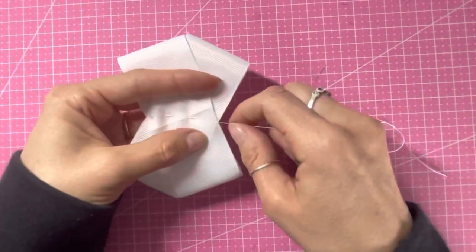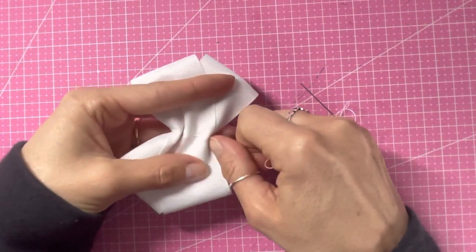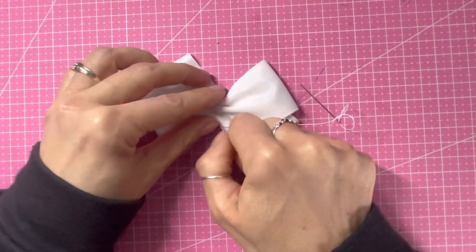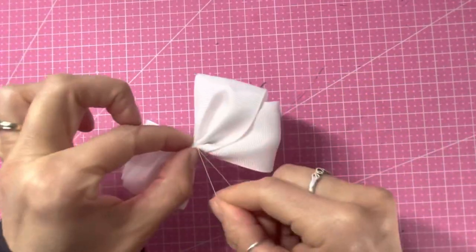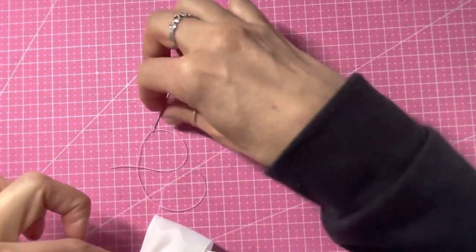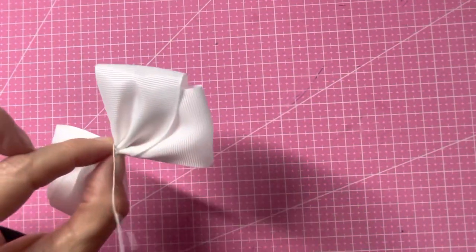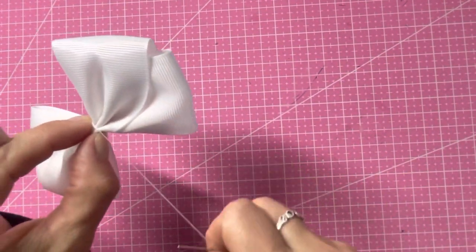And then when you've got those stitches in you can then give that a pull to form the pinch and then wrap that around the center a couple of times. And then on the underside just go through catching a little bit of the ribbon.